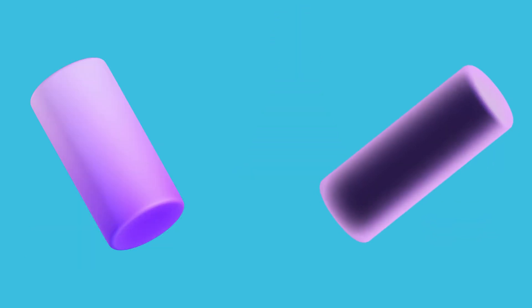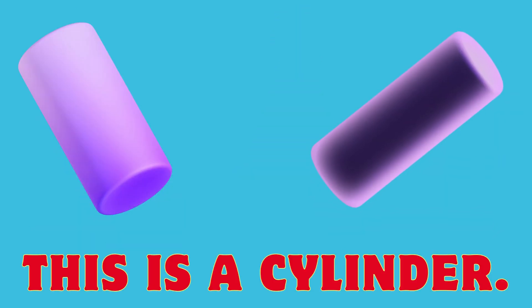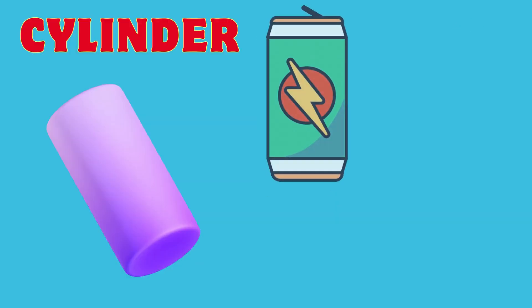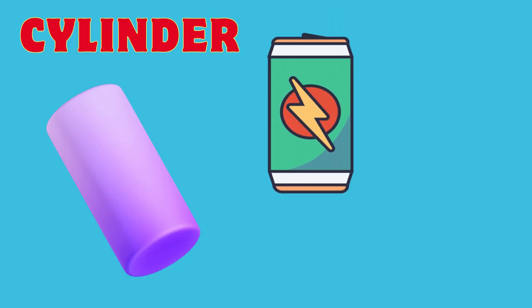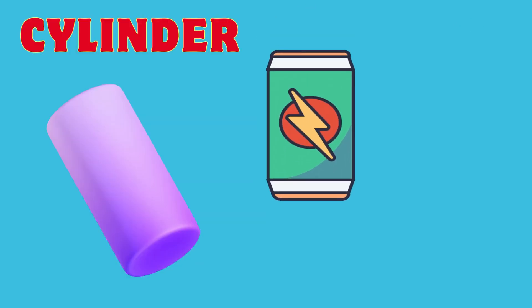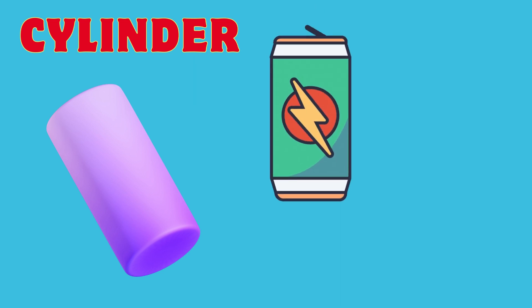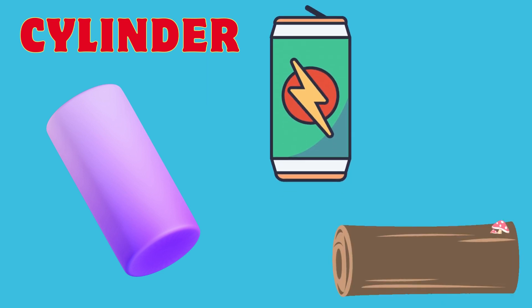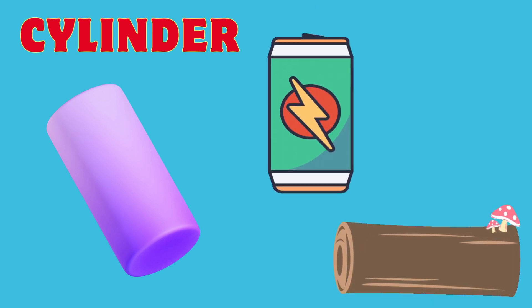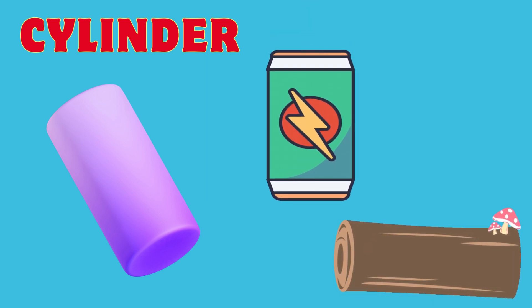What shape is it? This is a cylinder. This soda can is a cylinder. This wood log is a cylinder.